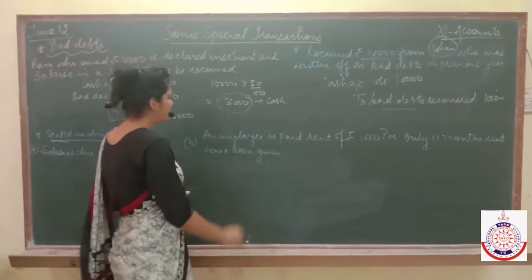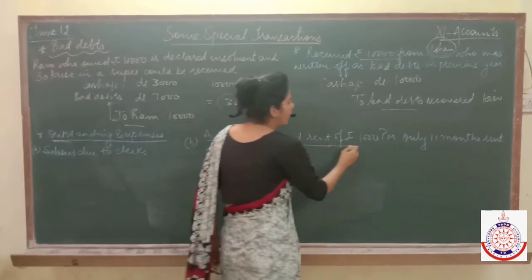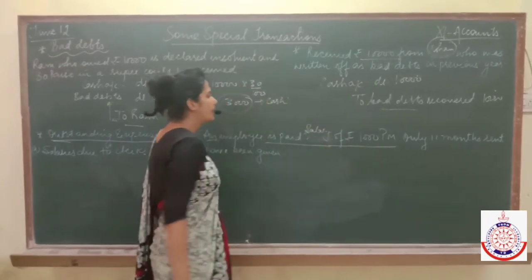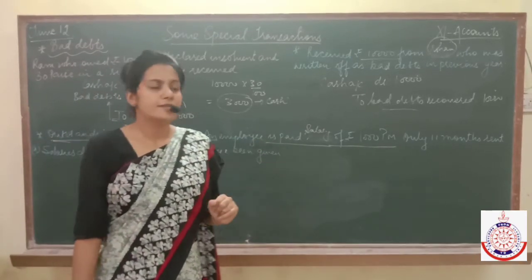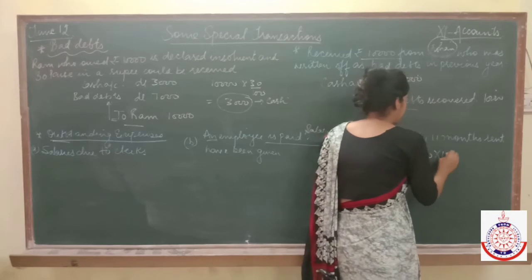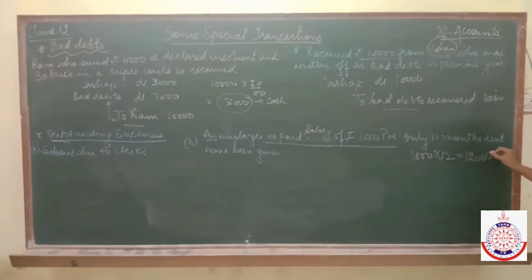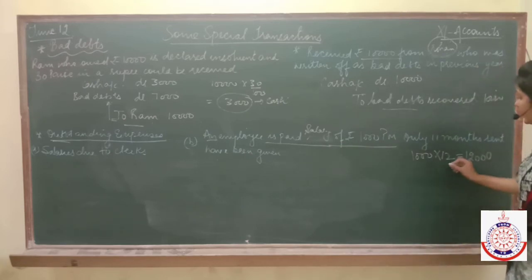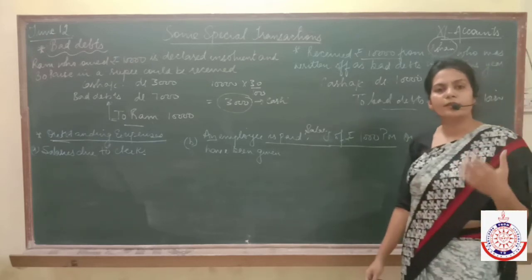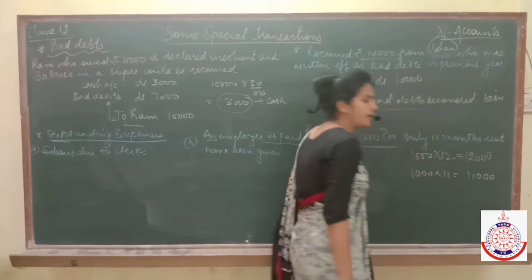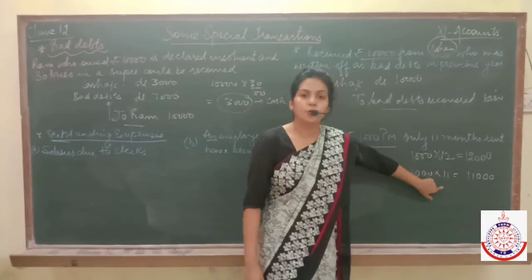Consider this transaction: an employee is working in our business and every month we are paying rupees 1,000 to him. So every year we are giving 12,000 to this person. But this financial year, only 11 months' salary have been given — instead of the full year's salary of 12,000, we paid only 11,000.